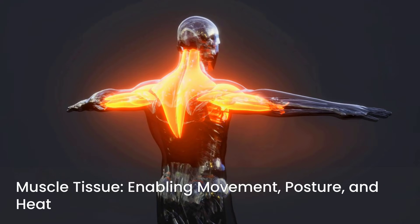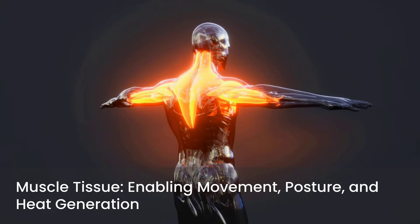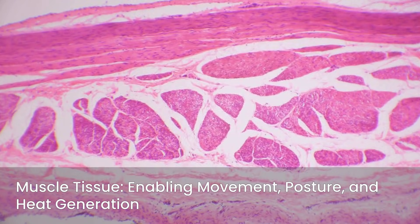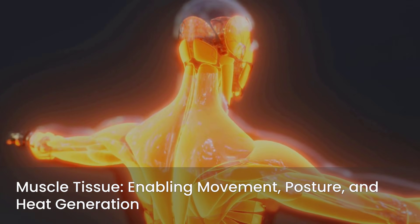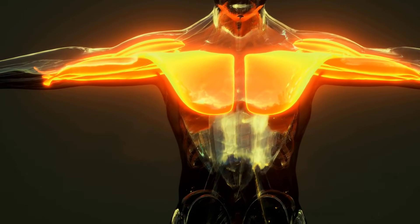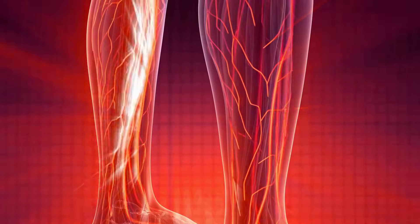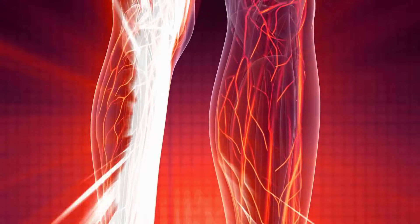Muscle tissue is specialized for contraction, enabling movement, maintaining posture, and generating heat. It's a fascinating tissue type with distinct structural and functional characteristics across its three forms. We have three primary types of muscle tissue: skeletal, smooth, and cardiac. Each has unique properties tailored to its specific role in the body, and understanding their differences is crucial.